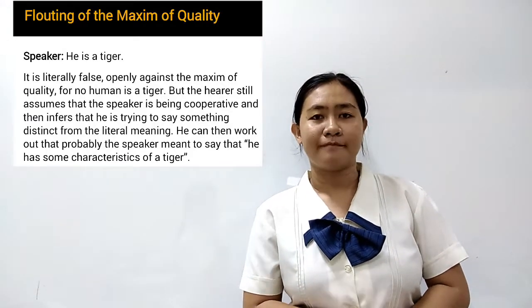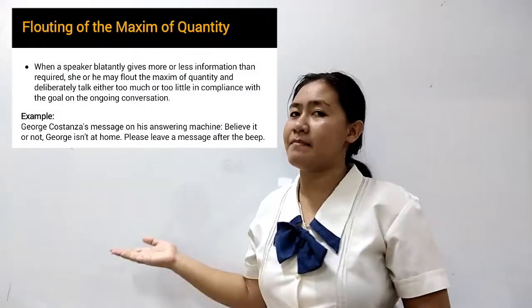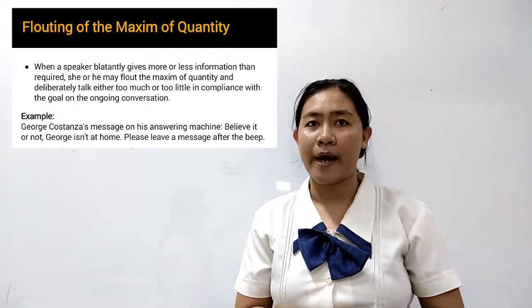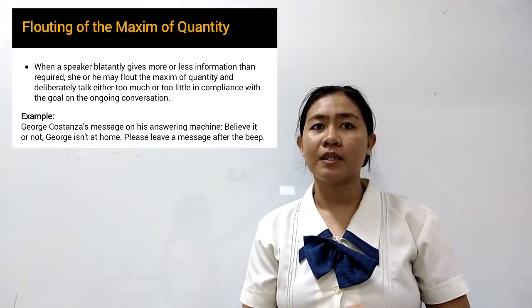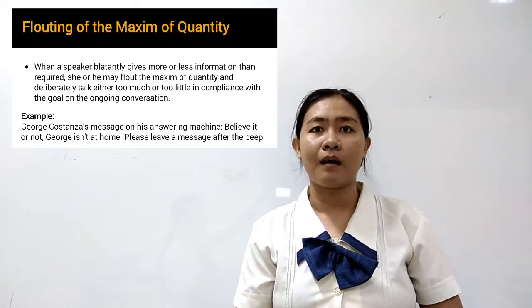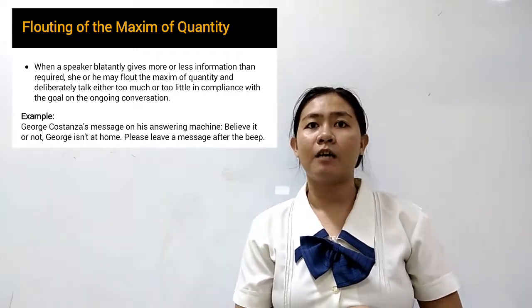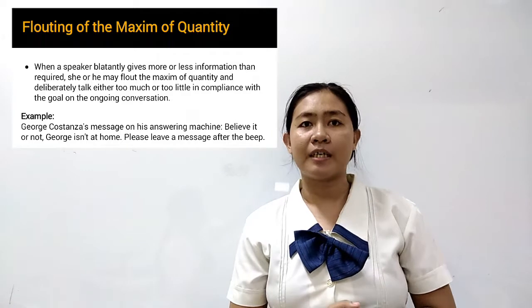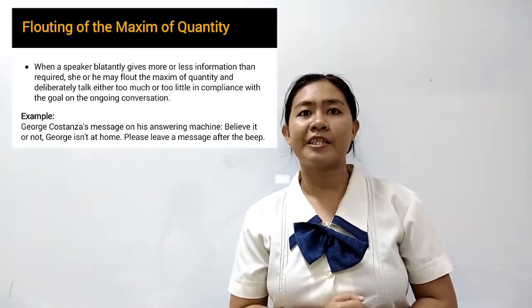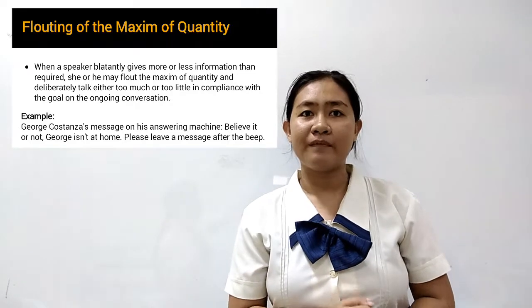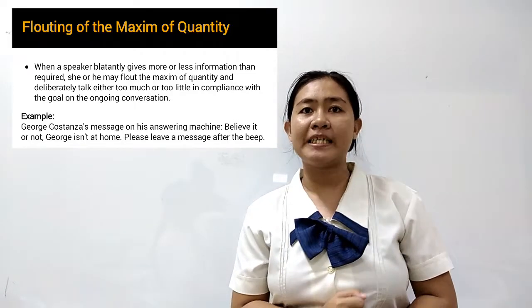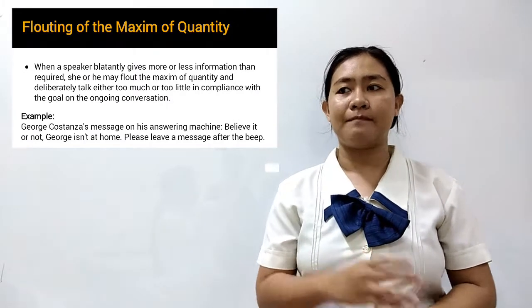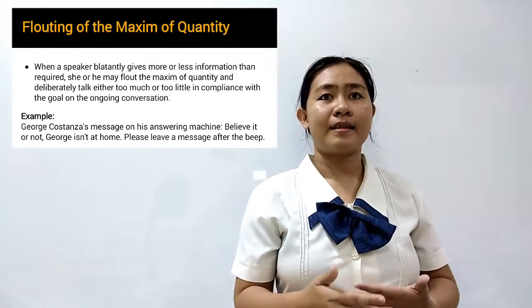Flouting of the maxim of quantity: when a speaker blatantly gives more or less information than required, he or she may flout the maxim of quantity by deliberately talking either too much or too little. Example: George Costanza's answering machine message — 'Believe it or not, George isn't at home. Please leave a message after the beep.' This flouts the maxim of quantity because there is less information given than expected.